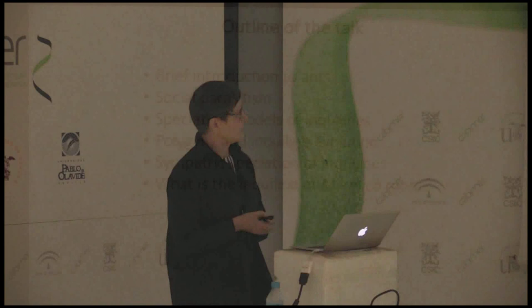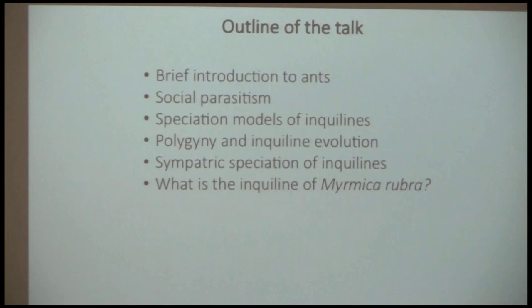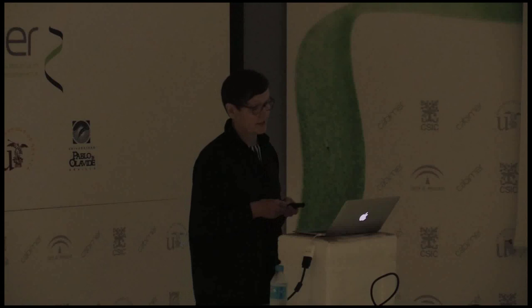Here is the outline of my talk. First, a brief introduction to ants, then the types of social parasites that are known, some speciation models particularly that apply to inquilines, then polygyny — the presence of multiple queens in a nest. I'll explain that because it's really important in inquiline evolution. Then results on sympatric speciation of inquilines, and finally a particular Myrmica inquiline of Myrmica rubra and its history and present status.